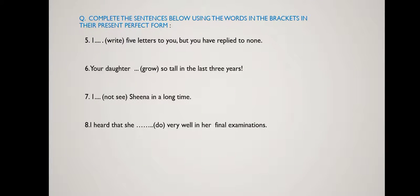Sentence 5: 'I [write] five letters to you but you have replied to none.' With 'I,' we use 'have,' and the third form of 'write' is 'written.' The answer is: 'I have written five letters to you but you have replied to none.'